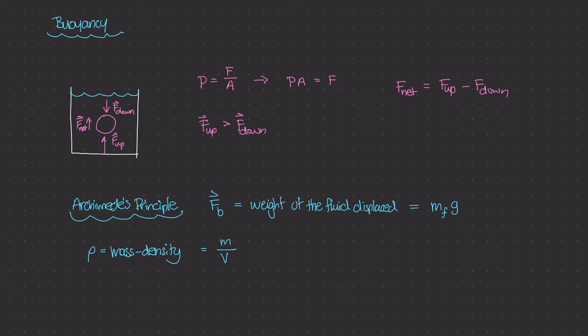And in this case, the water that got displaced, the mass density of the fluid, which is water, is really going to be the mass of the fluid divided by the volume of the fluid. That got displaced.